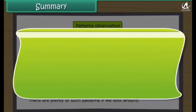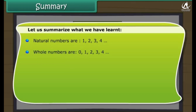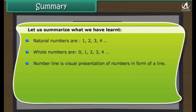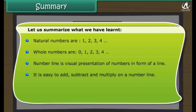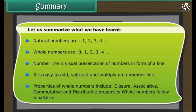Let us summarise what we have learnt. Natural numbers are 1, 2, 3, 4. Whole numbers are 0, 1, 2, 3, 4. A number line is a visual presentation of numbers in the form of a line — it is easy to add, subtract, and multiply on a number line. Properties of whole numbers include closure, associative, commutative, and distributive properties. Whole numbers follow a pattern.